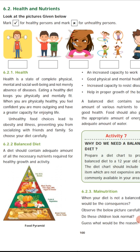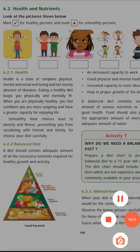We should take all the nutrients in proper proportions — that is called a balanced diet. If you do not take proper nutrition, you will be attacked by diseases such as Kwashiorkor and Marasmus. So you must take the proper proportion of nutrition in the diet — it is very important.